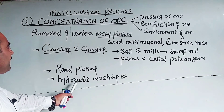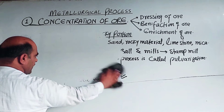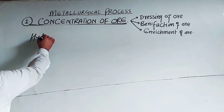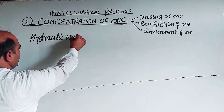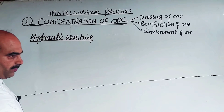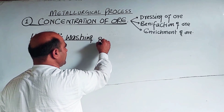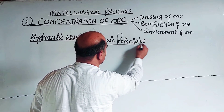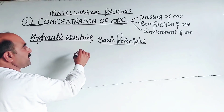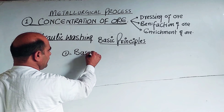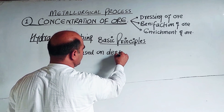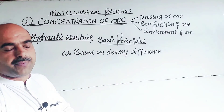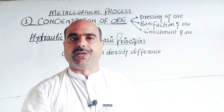The main concentration process we will discuss is hydraulic washing. What is hydraulic washing? The basic principle of hydraulic washing is based on the density difference between the metallic compound and the gangue.